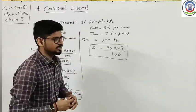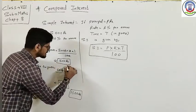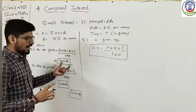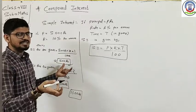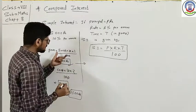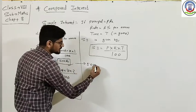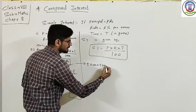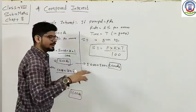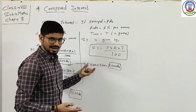Compound Interest में क्या होता है — जो आपका first year में interest आया, जैसे कि 500 rupees आया, वो आपका next year के लिए principal बन जाता है। That is, next year का principal क्या हो जाएगा? 5000 + 500 = 5500 rupees. फिर आपको next year के लिए principal amount 5000 न रेकर 5500 rupees लेना होगा।